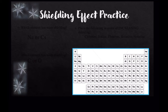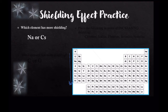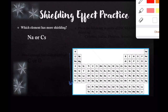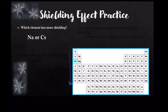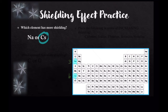Let's look at some practice problems. When we go down a group, shielding effect increases; left to right, it stays the same. Which element has more shielding — sodium or cesium? Here's sodium and here is cesium. Cesium, being in the larger numbered period, has the greatest shielding effect. Cesium is in period six, so it has six energy levels, while sodium is in period three and only has three energy levels. So cesium has a larger shield.